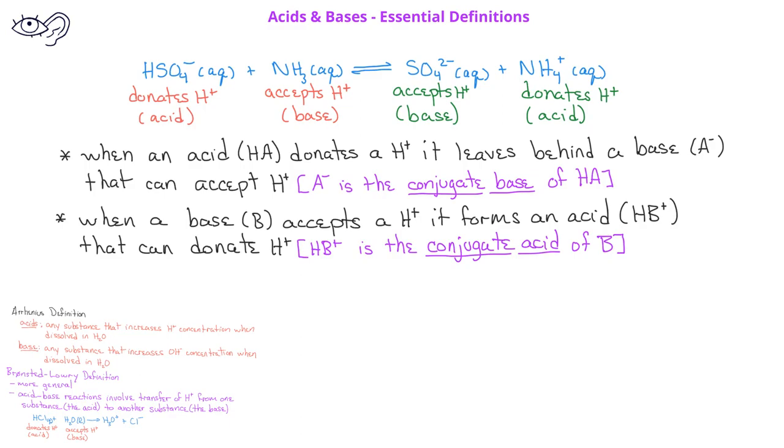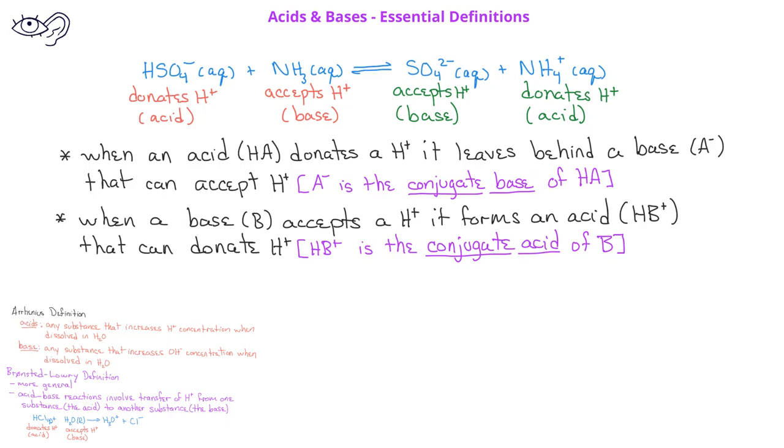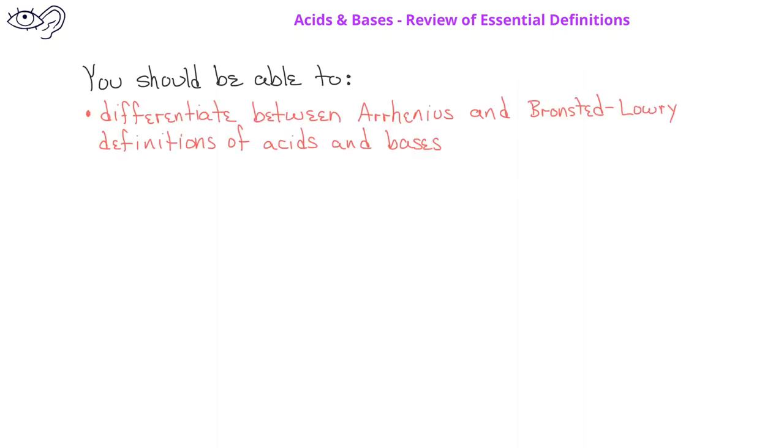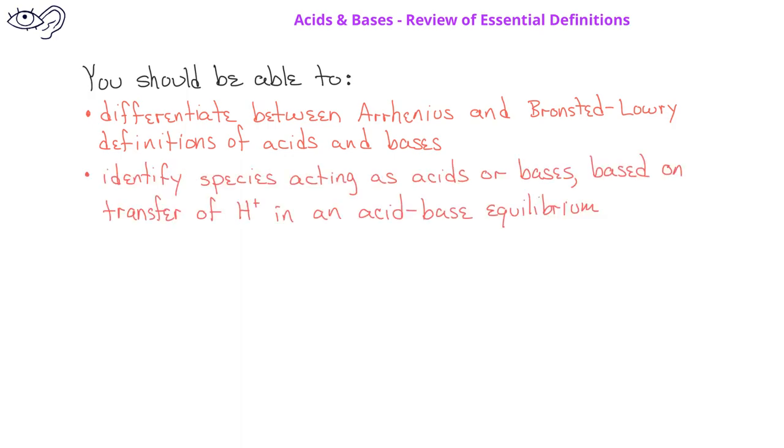Any acids and bases that differ by only one hydrogen ion are known as a conjugate acid-base pair. By now, you should be able to differentiate between the Arrhenius definition and the Bronsted-Lowry definitions of acids and bases. You should also be able to identify compounds that act as acids or bases based on proton transfer in an acid-base equilibrium.